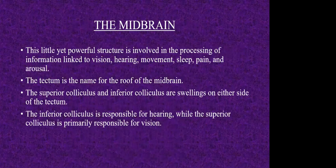Now comes the midbrain. There is a major portion of the midbrain called the tectum, which is located near the base or the roof of the midbrain. There are two swellings of this midbrain: one is known as the superior colliculus and the other as the inferior colliculus. The inferior colliculus controls our hearing and the superior colliculus controls our vision.